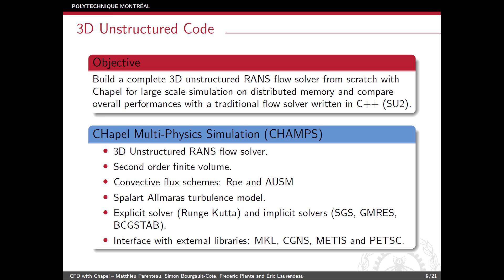With Chapel's C interoperability, we were able to interface with the usual libraries used in CFD. The libraries we use are the MKL library from Intel, the CGNS library for reading and writing CFD grids and flow solutions in HDF5 format, the METIS library for graph partitioning, and finally PETSc, which is a very powerful linear algebra library.